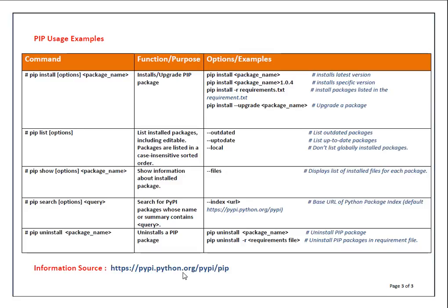'pip list' lists all packages installed in your pip environment in case-insensitive sorted order. If you want to check outdated packages, use 'pip list --outdated'. To check packages that are up to date, use 'pip list --up-to-date'. To see only locally installed packages that are not globally installed, use 'pip list --local'. The 'pip show' command shows detailed information about a specific installed package.